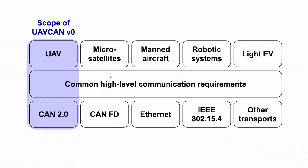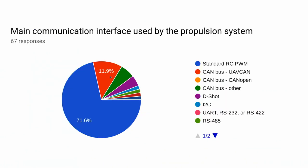UAVCAN version 0 exists in the world alongside other protocols and applications that could also benefit from it. Last year we ran a survey among companies that are members of the DroneCode Foundation, and we discovered that UAVCAN version 0 is used in about 12% of vehicles. Those numbers are now obsolete, and we expect the current percentage to be substantially higher.